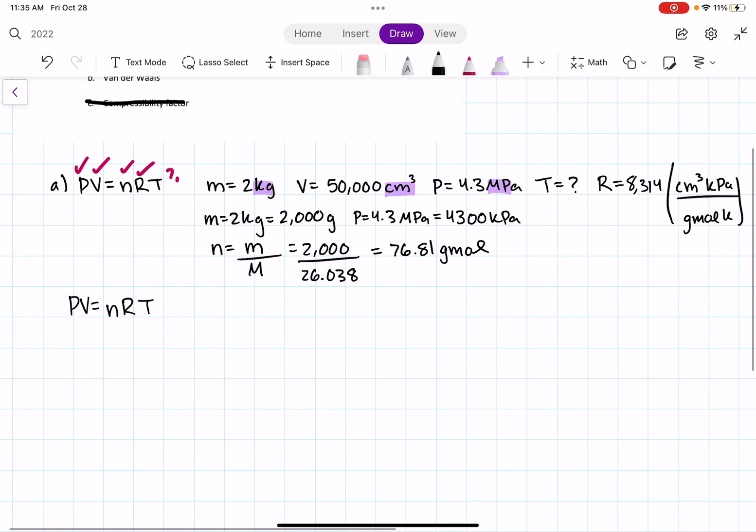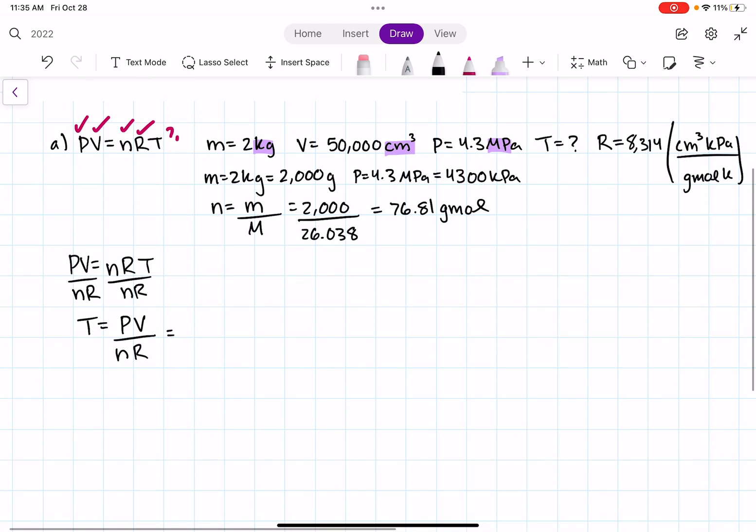I'm going to solve for T by dividing both sides by NR. So you get temperature is equal to pressure times volume divided by moles times R. Alrighty. We're going to start just plugging and chugging.